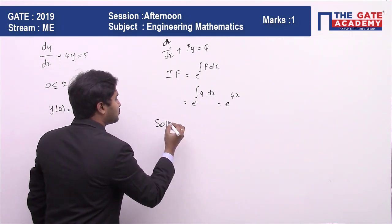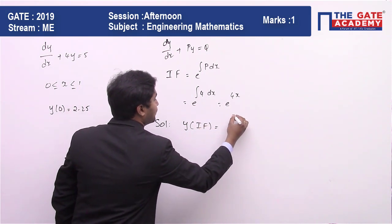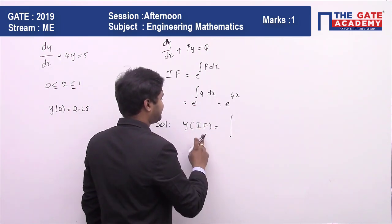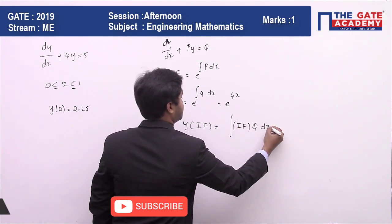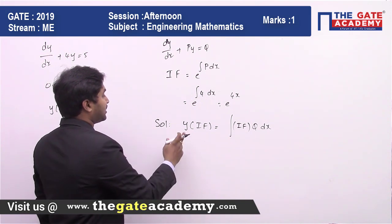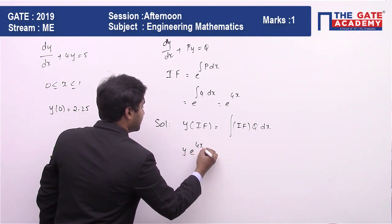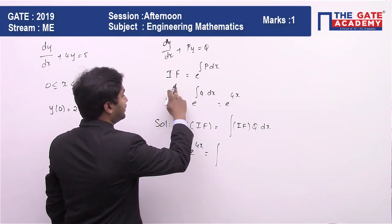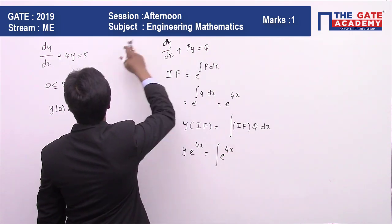Here, y multiplied by integration factor, which is e^(4x), is going to be ∫(integration factor, which is e^(4x), times q) dx. What is q here? q is nothing but 5.